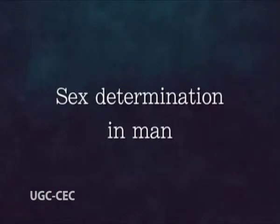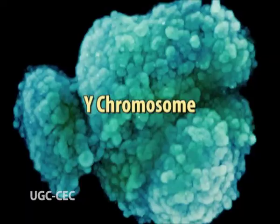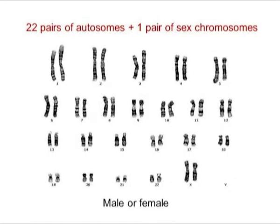If the female gamete is fertilized by an X-type male gamete, the resulting individual is female; by a Y-type male gamete, the resulting individual is male. Sex determination in humans is similar to that of Drosophila, but here the Y chromosome contains potent male sex-determining genes which can almost completely overcome the feminizing action of the genotype. In humans, 22 pairs of autosomes and one pair of allosomes are present.